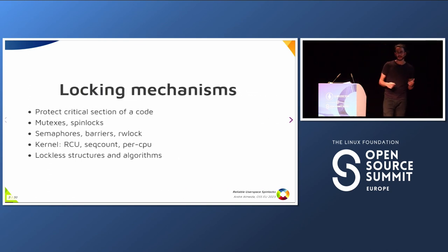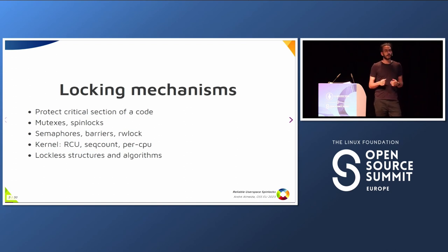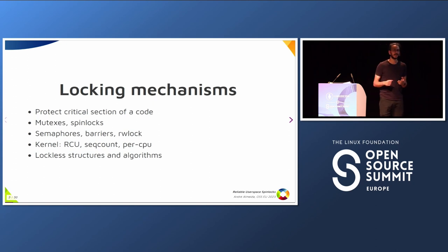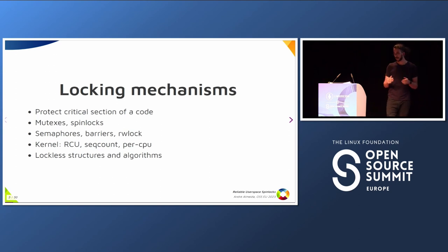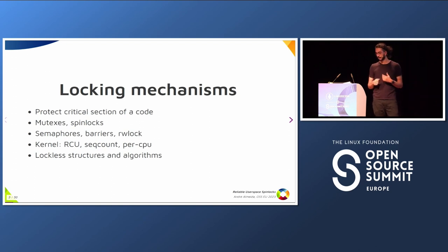We have a locking mechanism because if people want to write multi-threaded applications, sometimes an application needs to compete for a resource. We want to make sure that this resource is accessible by only one thread. For that, we have a lot of different locking mechanisms. The most basic and famous ones are mutexes and spin locks.